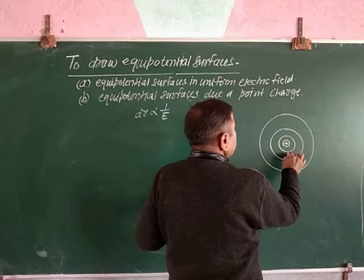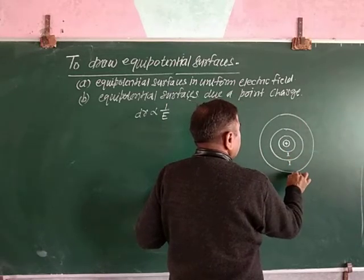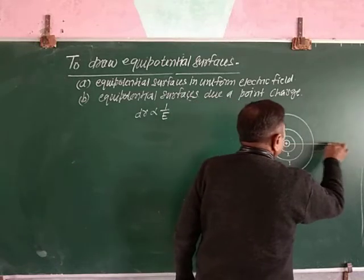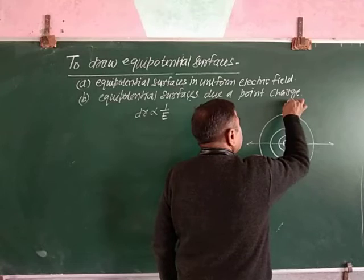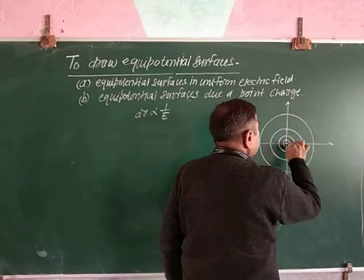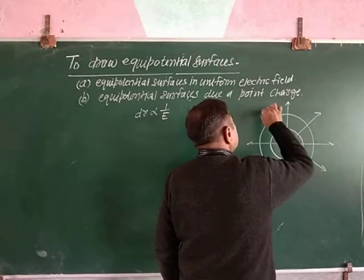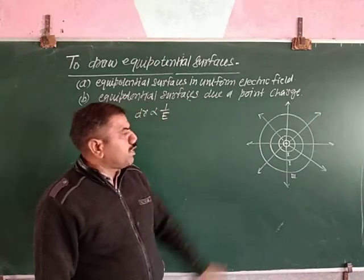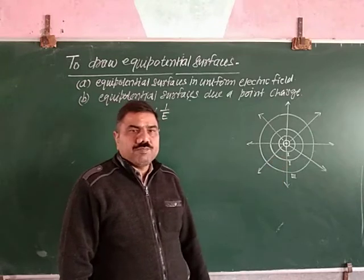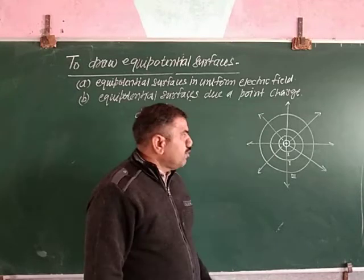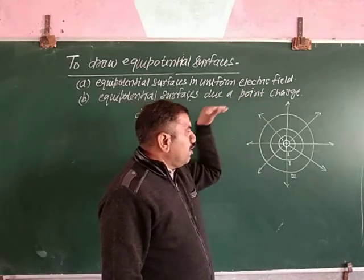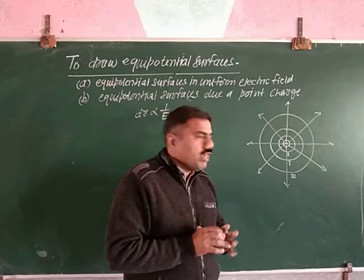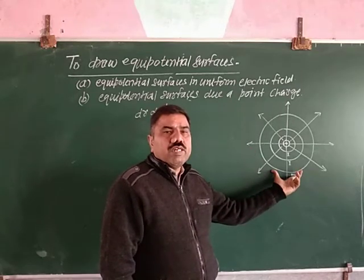This is equipotential surface 1, this is 2, and this is the 3rd. This is the point charge; the direction of the electric field is outward from the charge. If the point charge is negative, then the direction of the electric field will be inward, that is toward the charge. But the position of the equipotential surfaces will be the same in both cases.